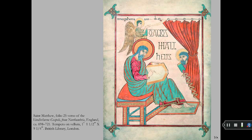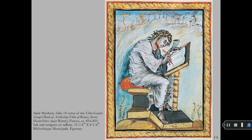This folio page of St. Matthew reflects the continuing influence of classic art in the Middle Ages. The uniquely Northern European energetic artistic style is also displayed in another folio page of St. Matthew. Northern art largely focused on the linear edges of shapes, while classic art focuses on the mass of the object.